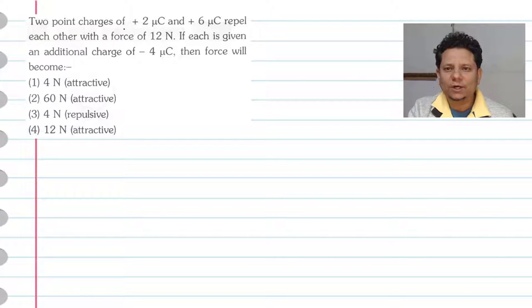Next question. Question says two point charges of plus 2 micro coulomb and plus 6 micro coulomb repel each other with a force of 12 newton. If each is given an additional charge of minus 4 micro coulomb,